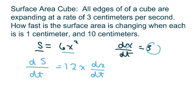So we want to know what happens when x is 1. So that would be 12 times 1 times 3, which is equal to 36 centimeters squared per second.